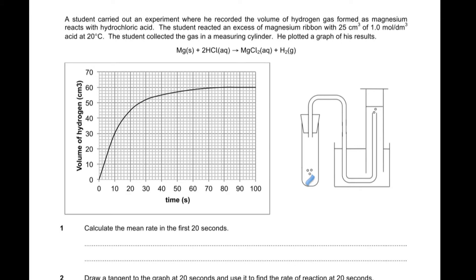A student carried out an experiment where he recorded the volume of hydrogen gas formed as magnesium reacts with hydrochloric acid. The student reacted an excess of magnesium ribbon with 25 centimetres cubed of 0.1 mol per decimetre cubed acid at 20 degrees C. The student collected the gas in a measuring cylinder and plotted a graph of his results. Question one says, calculate the mean rate in the first 20 seconds.